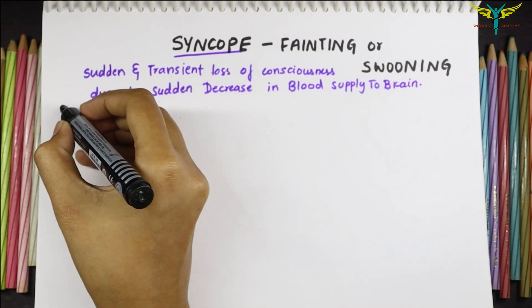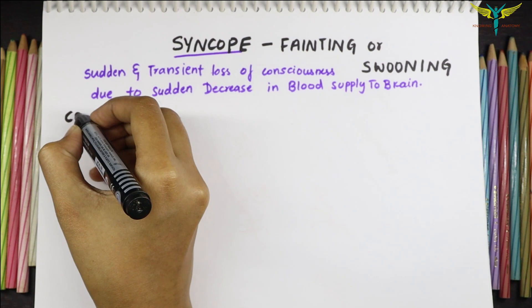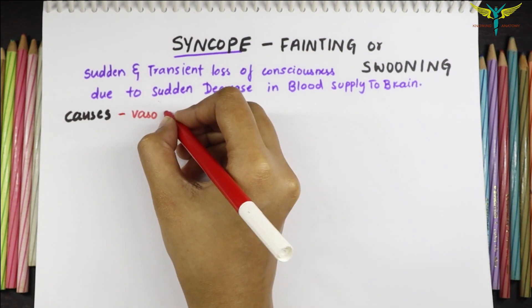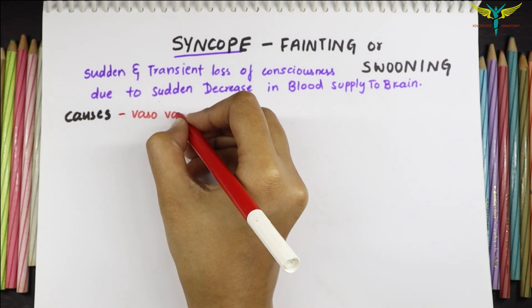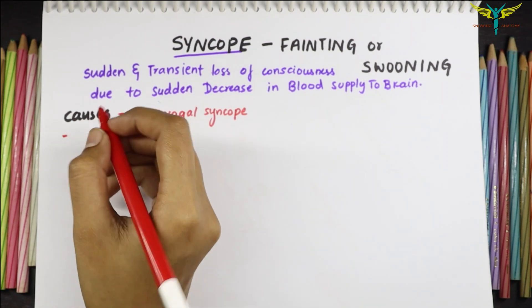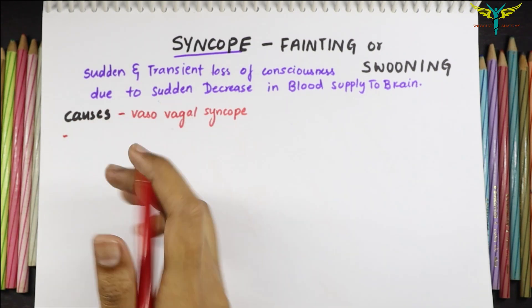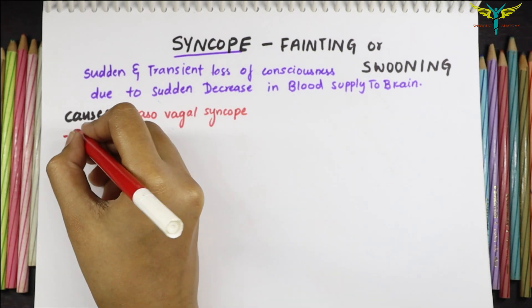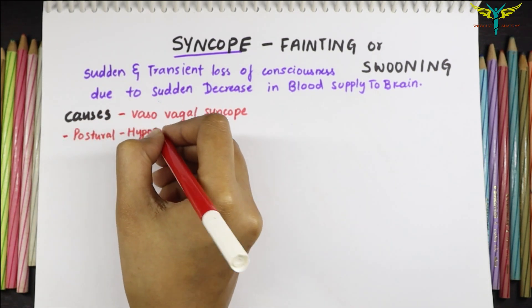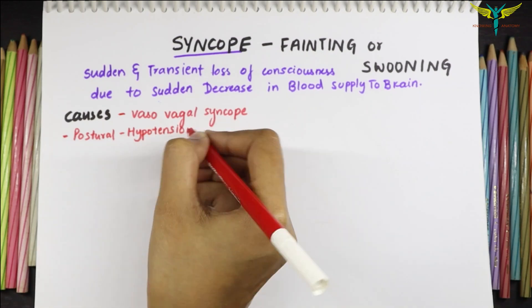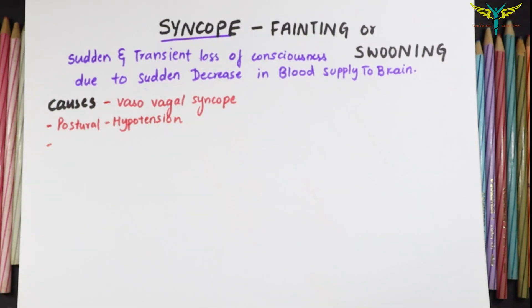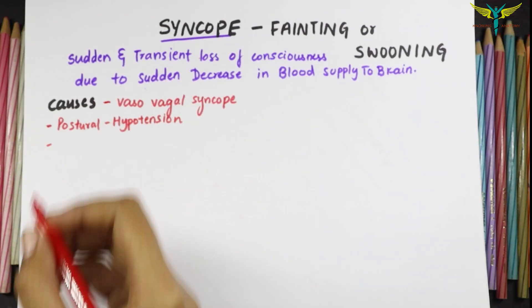The causes of syncope include vasovagal syncope, postural or orthostatic hypotension syncope, and cardiac arrhythmias.